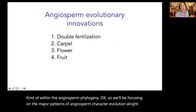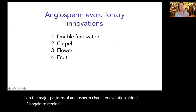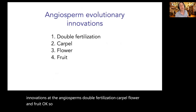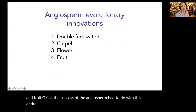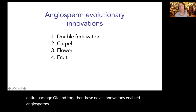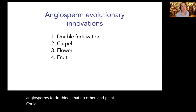We'll be focusing on the major patterns of angiosperm character evolution. To remind yourself, the key evolutionary innovations of the angiosperms are double fertilization, carpel, flower, and fruit. The success of the angiosperms had to do with this entire package together — these novel innovations enabled angiosperms to do things that no other land plant could or can possibly do.